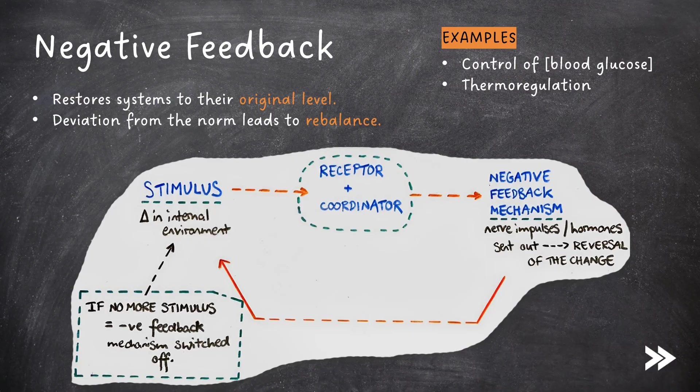Examples of negative feedback include the ones we just talked about. They include the control of blood glucose concentration, as well as thermoregulation, i.e. control of body temperature. If one of these factors changes, then negative feedback mechanisms try to restore these back to the original level. For example, if body temperature increases, then negative feedback mechanisms will try to decrease the body temperature back to its original level.